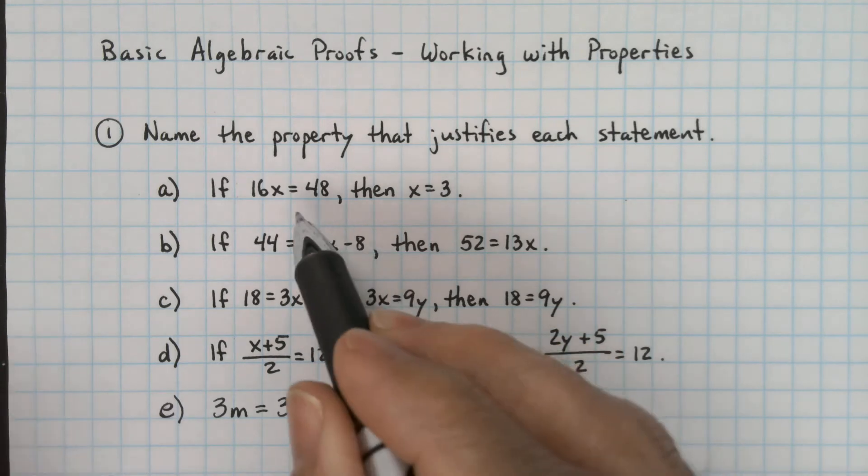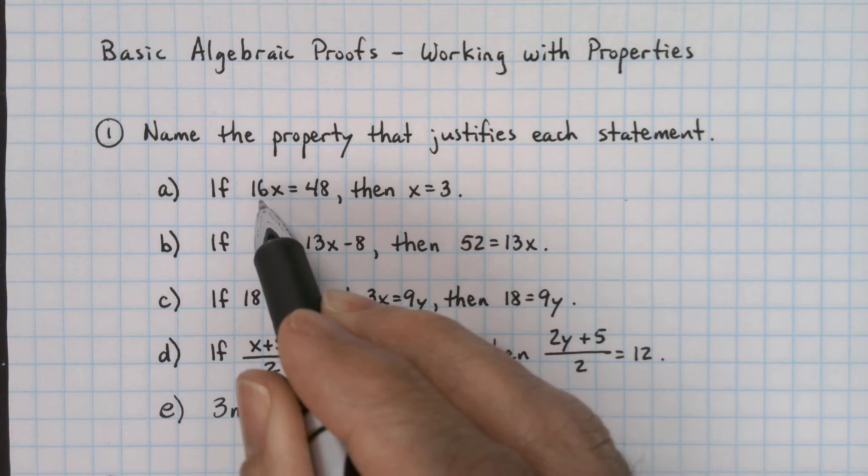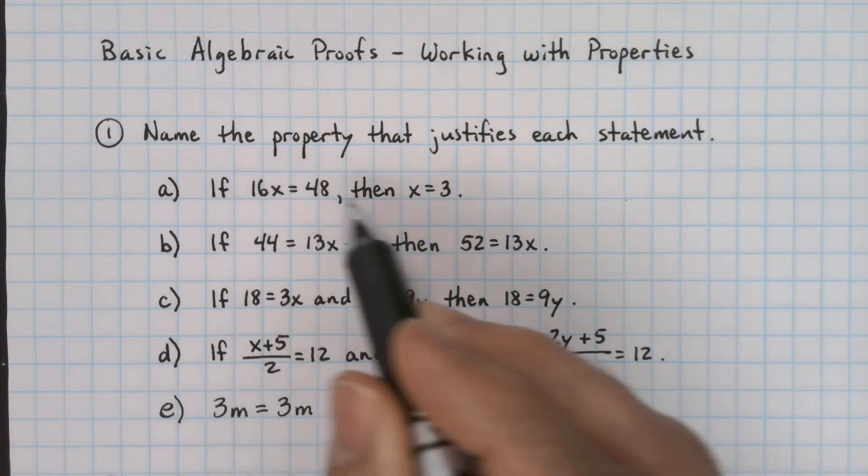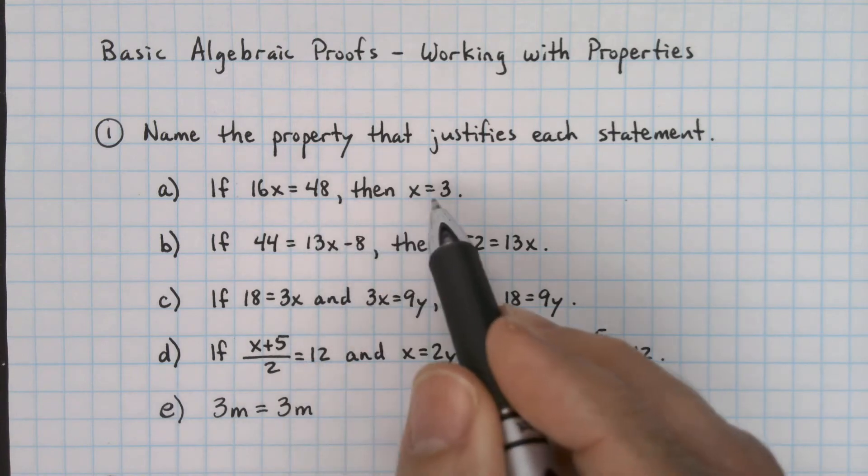In part A, if 16x is equal to 48, then x is equal to 3. We seem to have gotten rid of the 16 on the left. We have divided by 16, and we've divided by 16 on the right as well.